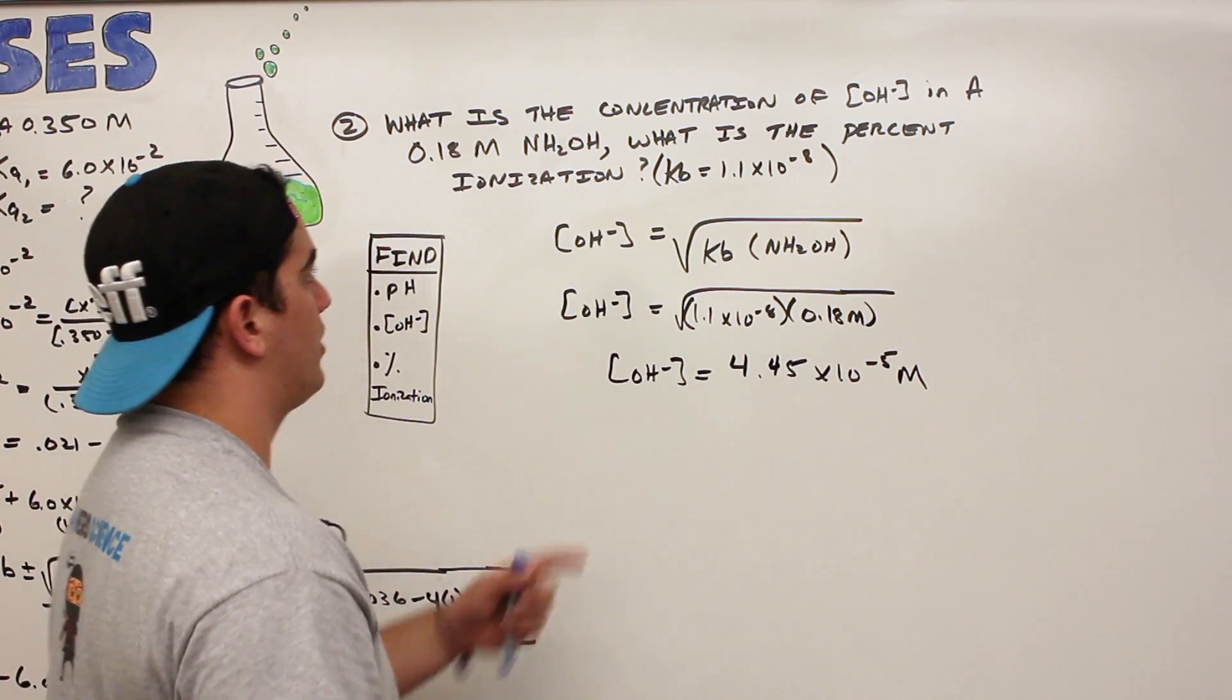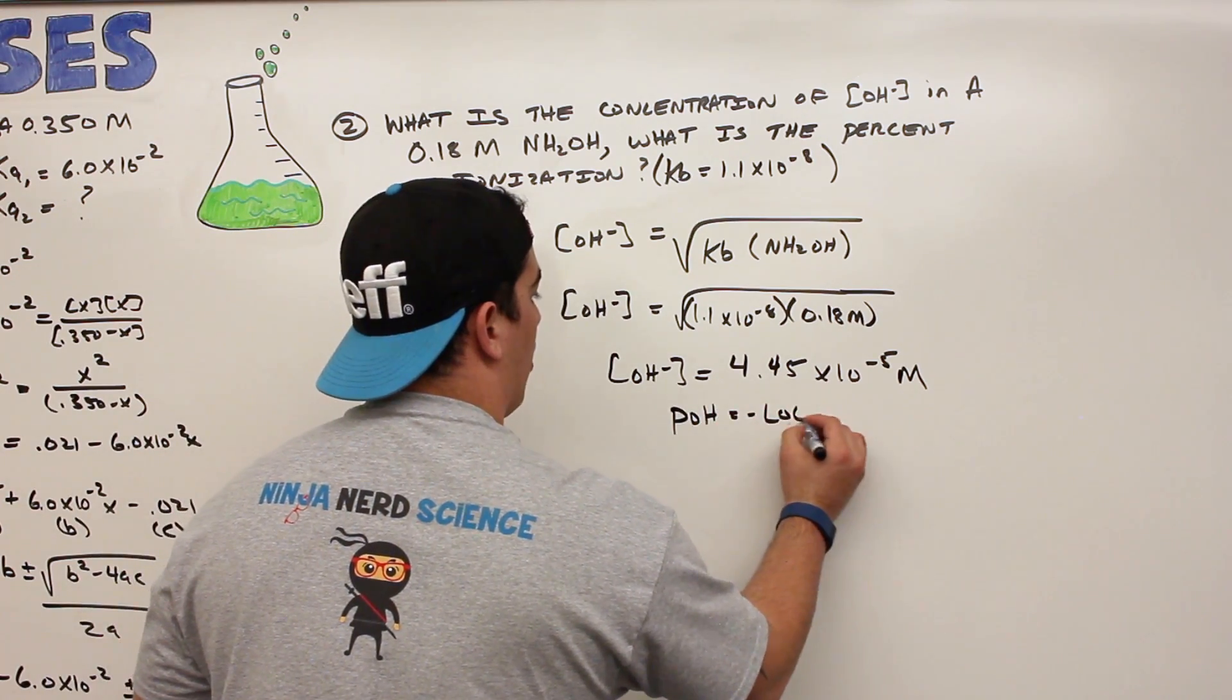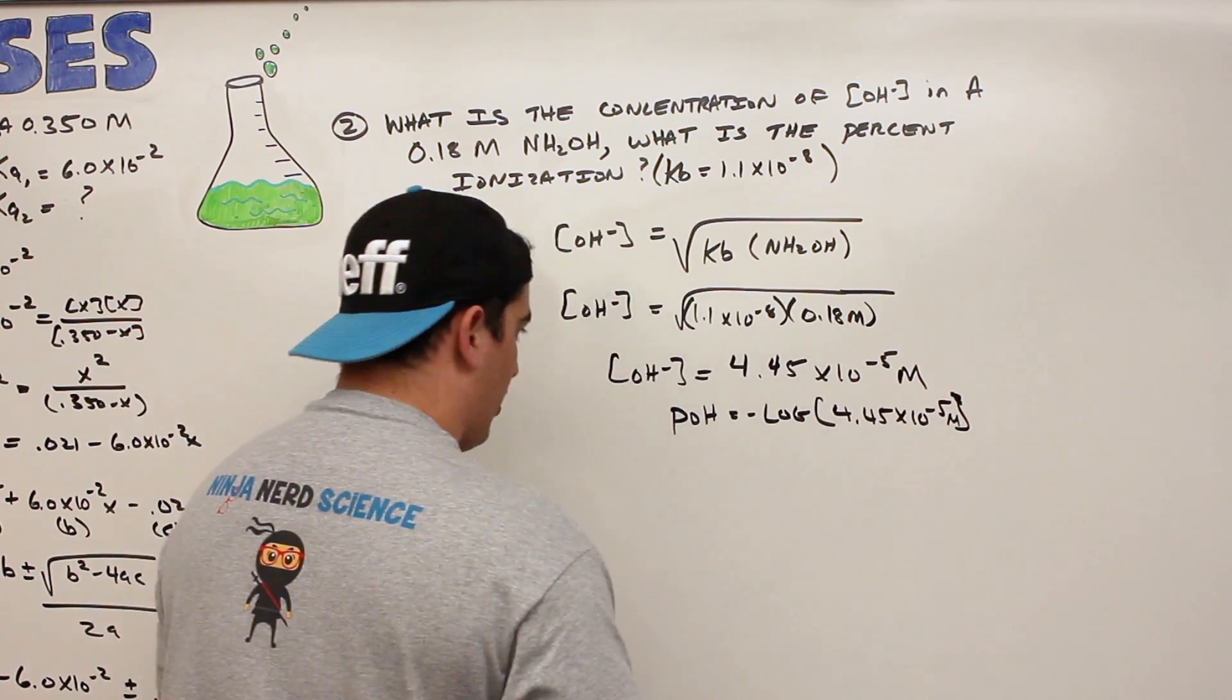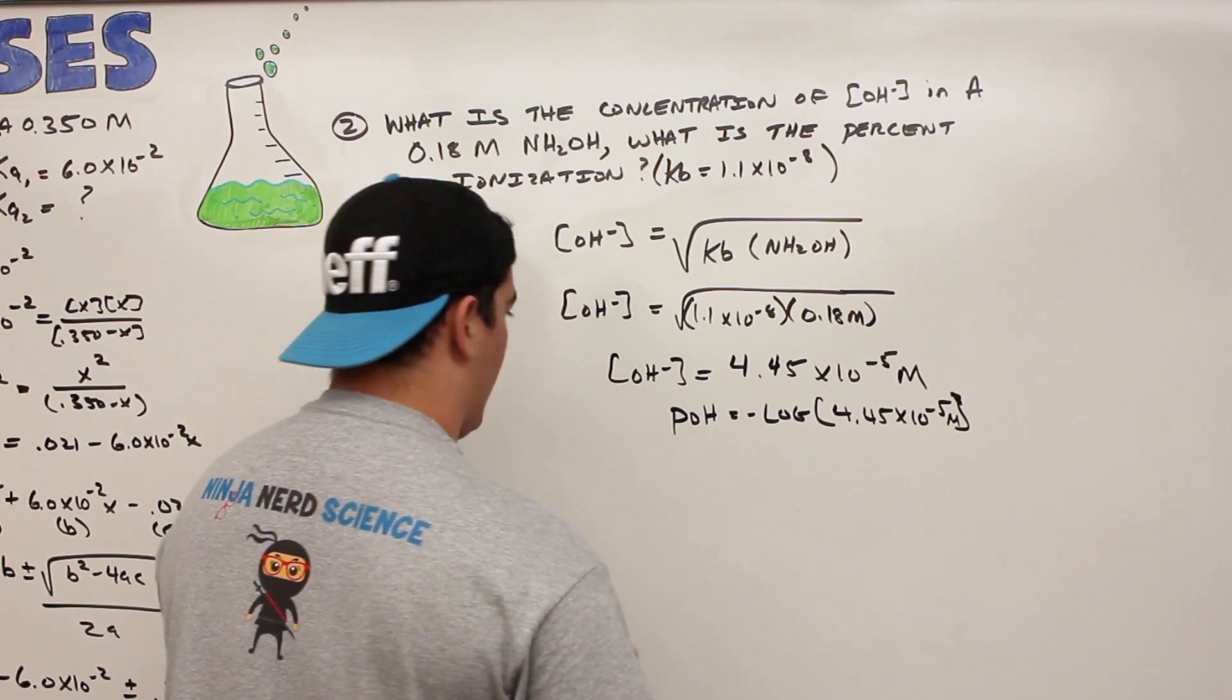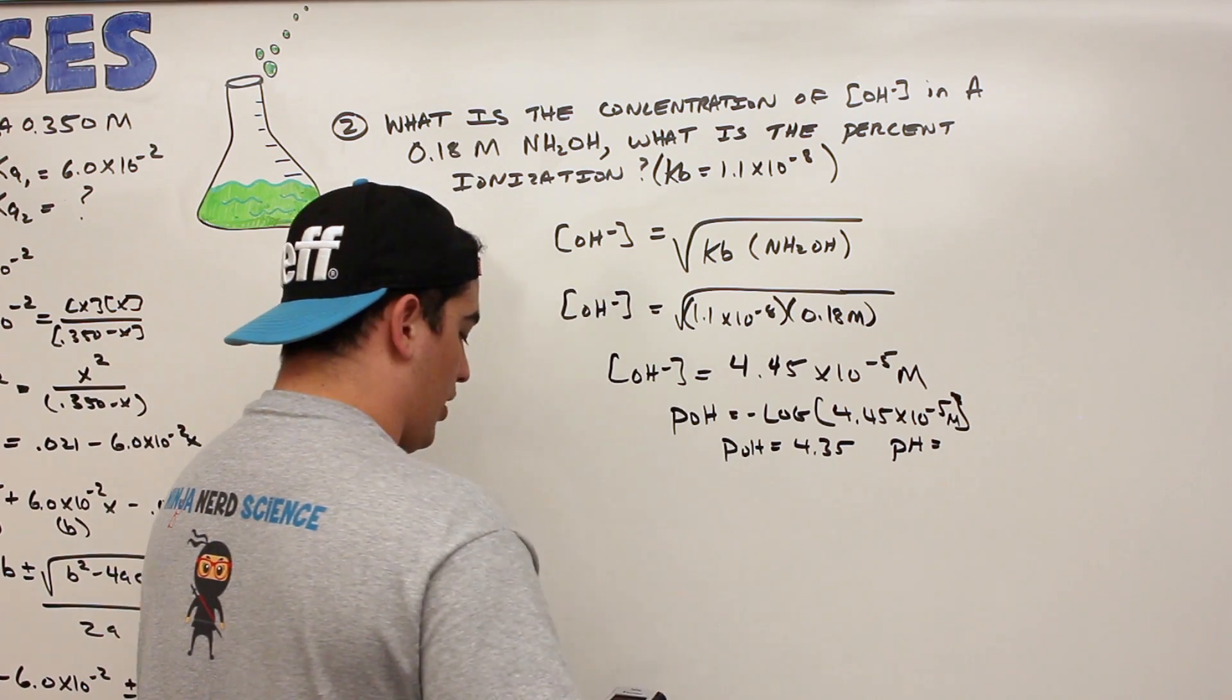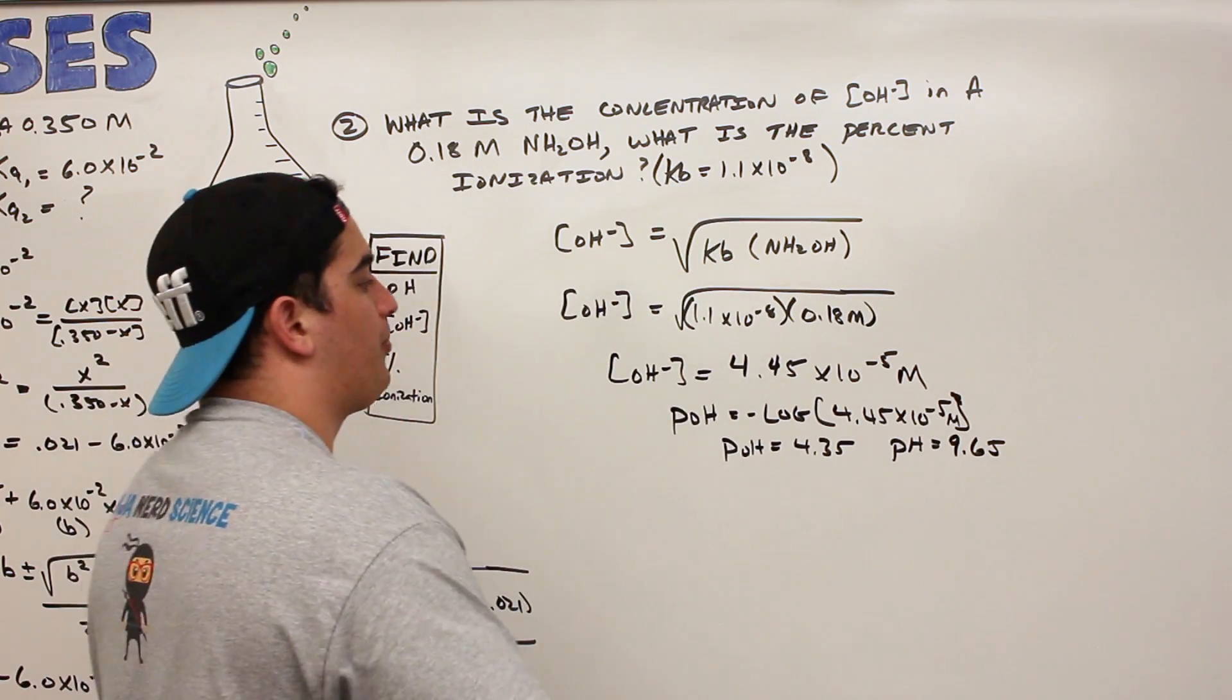That part right there. If we want to, we could also get the pH. Let's go ahead and just find the pH. So how would you do this? You get pOH is equal to the negative log of the hydroxide ion concentration, which is 4.45 times 10 to the negative 5. So this is going to give us somewhere around 4 point something. Let's go ahead and plug this in here. Negative log this bad boy, and we get 4.35 as the pOH. But if we do pH, it's just 14 minus 4.35. So let's do 14 minus 4.35, and we get 9.65. So out of this we get 9.65. So that's our pH.